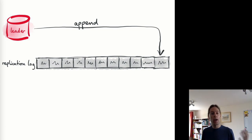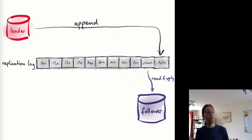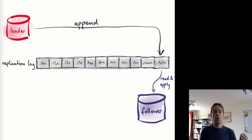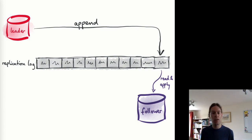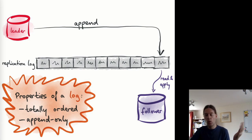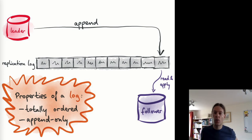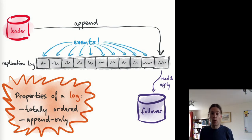With log-based replication, the leader maintains a log, and every time data is written an event or record is appended to the end of this replication log, which grows in an append-only way. After an event has been written to the log it is immutable. Any follower that wants a copy reads this replication log sequentially from the beginning, processes one event at a time, and applies them to its own copy of the database. After each write it repeats the same sequence as the leader. When the follower reaches the end of the log, it will be in the same state as the leader.